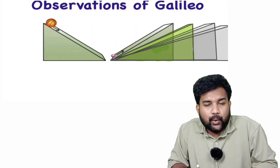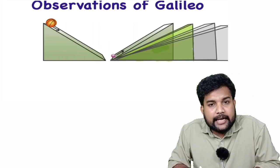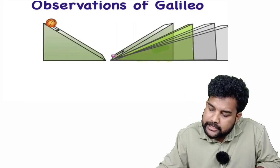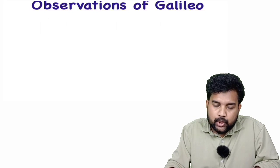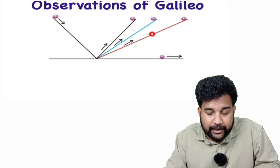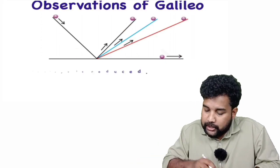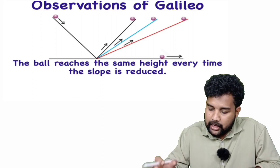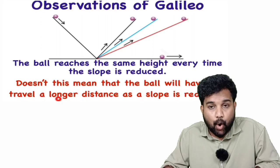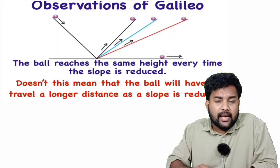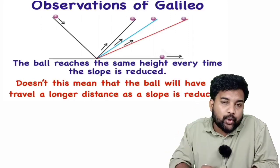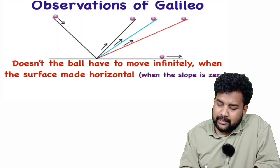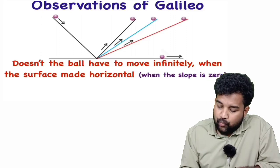There is no external force needed. If there is no inclination — if the surface is made horizontal — the ball will have to travel a longer distance as the slope is reduced. This means the ball has to move infinitely when the surface is made completely horizontal.